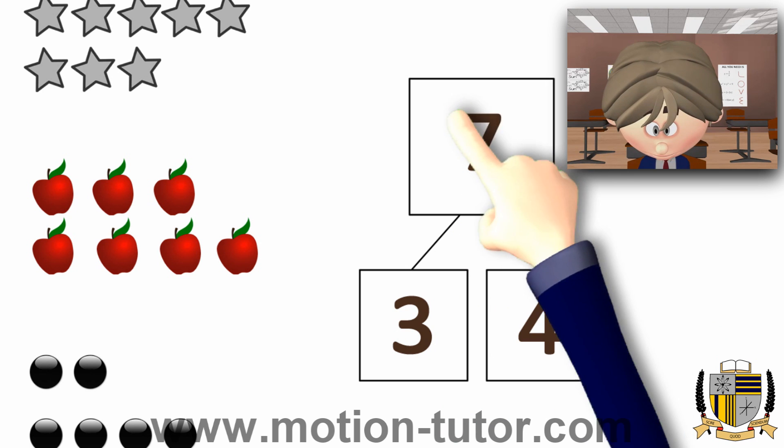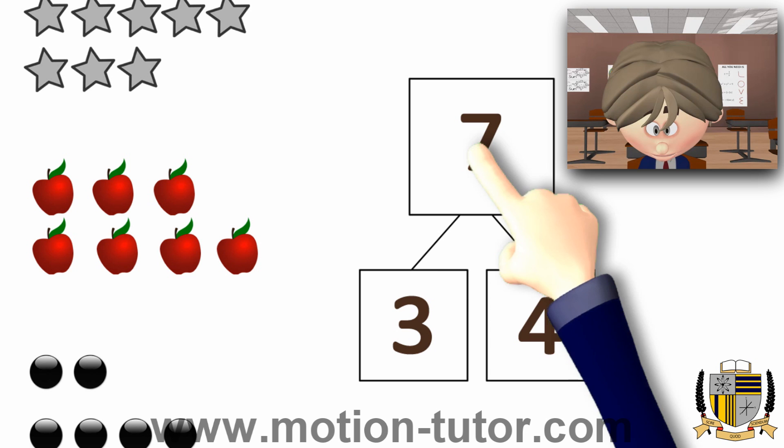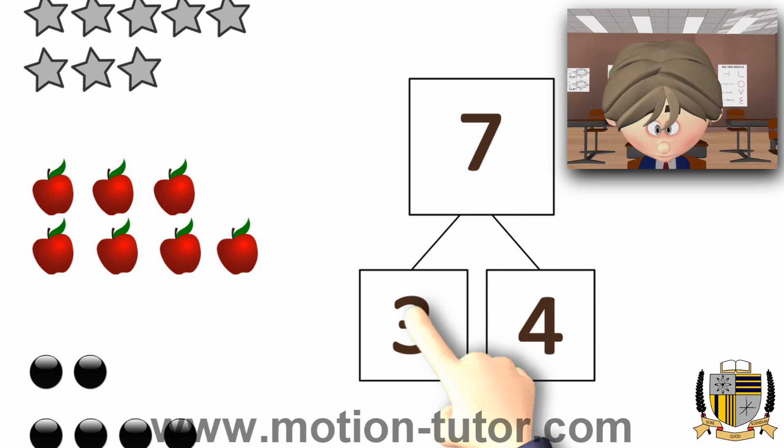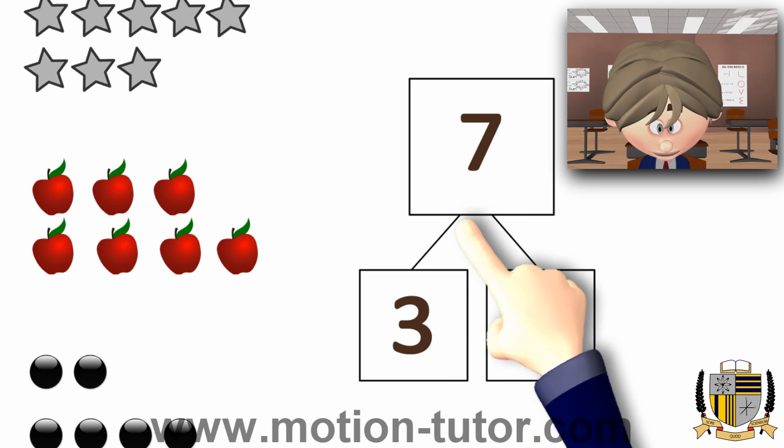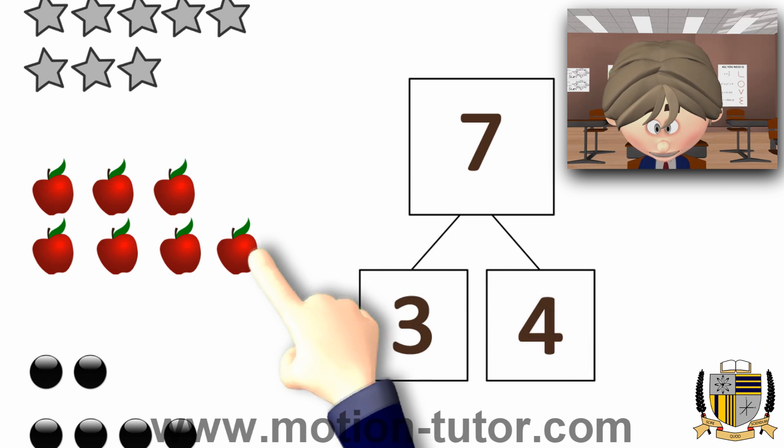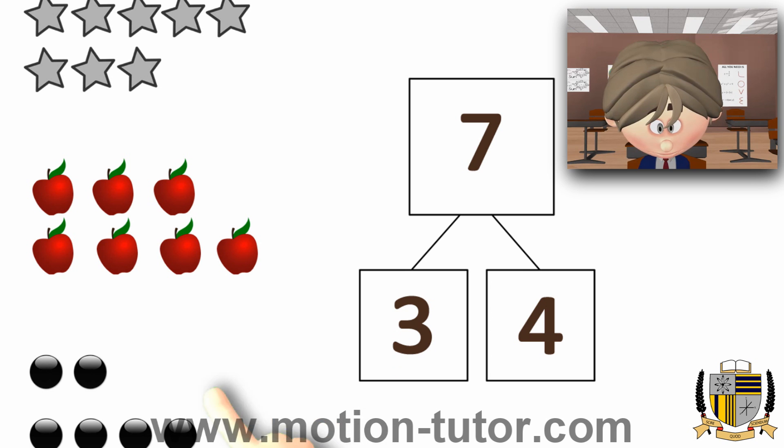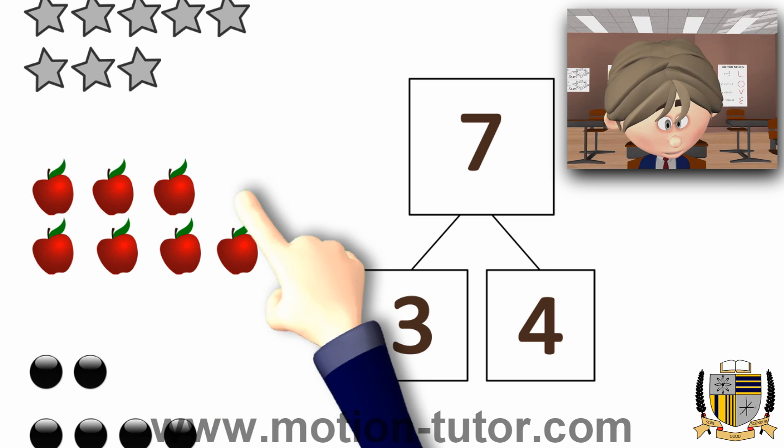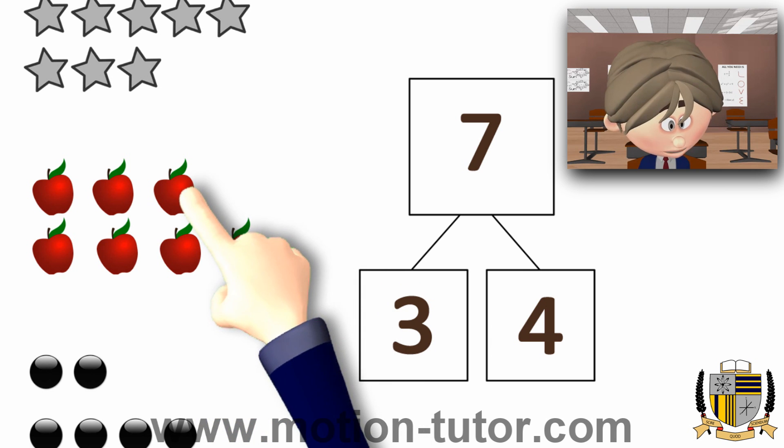Another way you can look at it is 7 is being broken down to 3 and 4. So, which one of these pictures shows 7 altogether. And 3 and 4 are the parts.